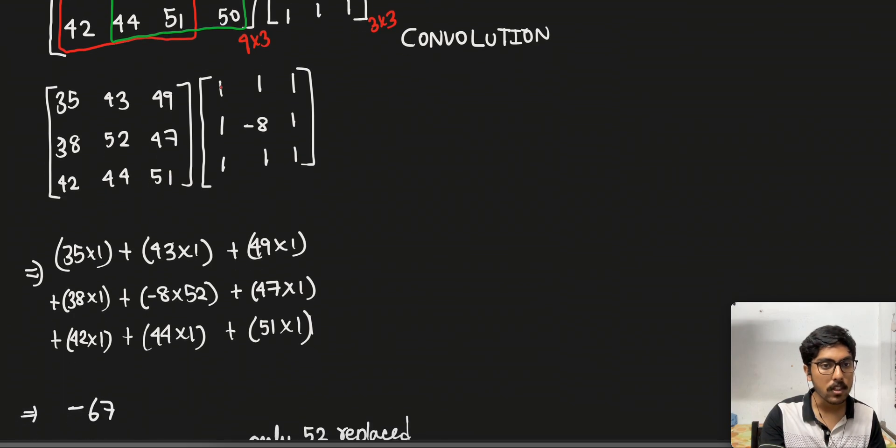What we do here is multiply this one with 35, then this one with 43, then this one with 49, and we continue it with all the numbers of the Laplacian filter to the image data. Then we multiply it and sum all these into a single number.